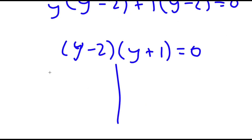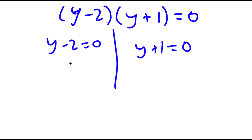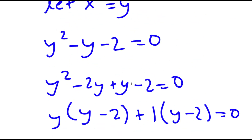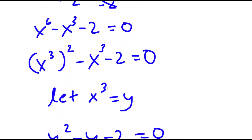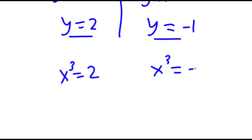So this gives me two equations: y minus 2 is equal to 0 and y plus 1 is equal to 0. For y minus 2 equals 0, y equals 2, and for y plus 1 equals 0, y equals negative 1. Now remember how we let x to the power of 3 equal to y. So now I have x to the power of 3 is equal to 2 and x to the power of 3 is equal to negative 1.